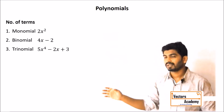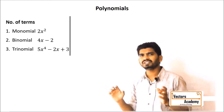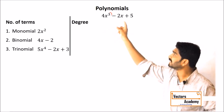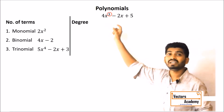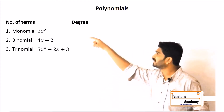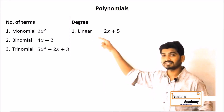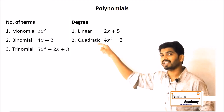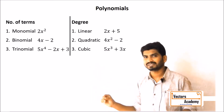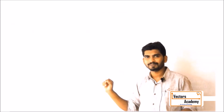Polynomials can also be classified based on the degree of the expression. The degree is the highest power of the variable. For example, consider this expression — the highest power of x is 3, so the degree is 3. Based on the degree, if it is 1 that is called a linear polynomial, if it is 2 that is a quadratic polynomial, and if it is 3 that is a cubic polynomial. So there are two types of classification: one based on the number of terms, and the second based on the degree.